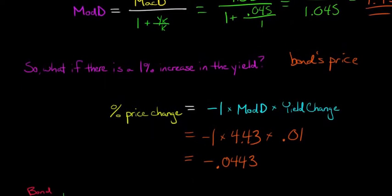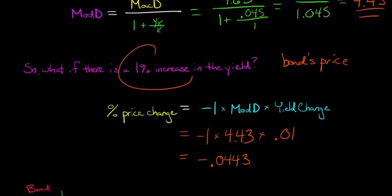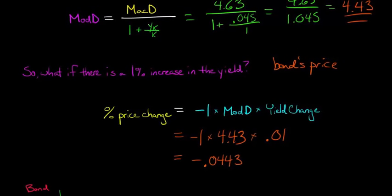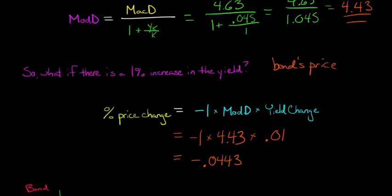Now, how do we interpret that? Well, that's saying that if the yield increases 1%, which is what we're asking about, then the price of the bond is going to go down. This is a negative number. It's going to decrease by 4.43%.